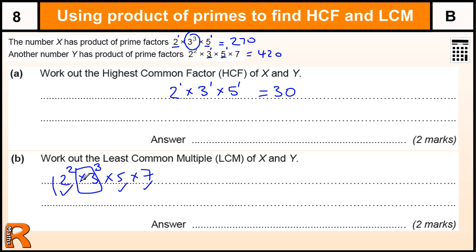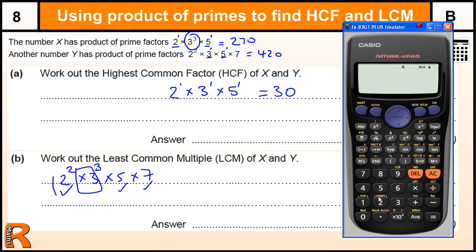Once we've changed that, we now have a number that both numbers go into — because that's part of that number already, just the smaller power of 3. This number goes into it because 2 to the power of 1 goes into 2 squared, 3 cubed goes into 3 cubed, 5 goes into 5, and there is no 7. So our final number is 2 squared times 3 cubed times 5 times 7. Let's get the calculator out and work out what that is.